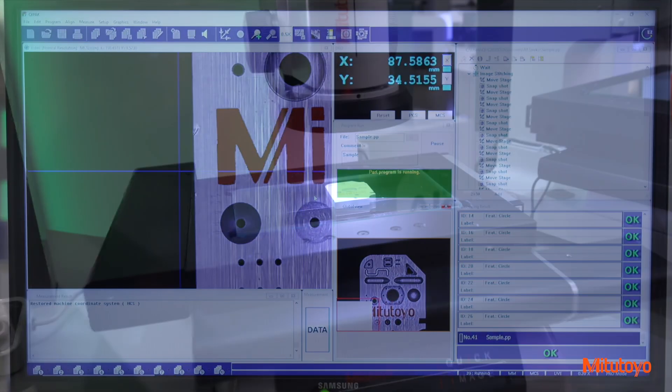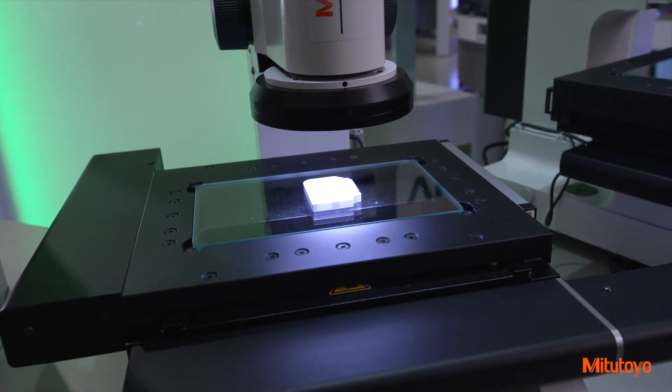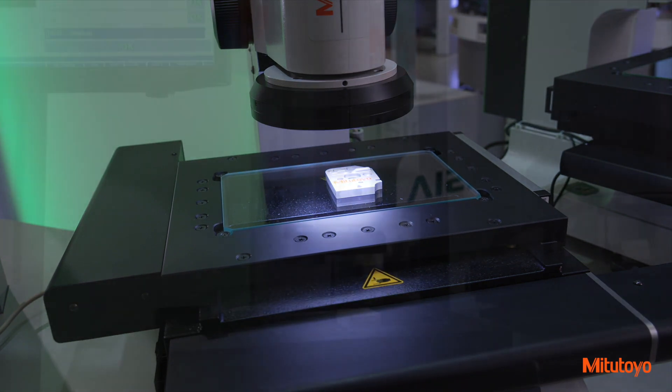A double telecentric optical system eliminates human focusing errors. Errors due to height are greatly minimized within a depth of focus up to 22 millimeters.